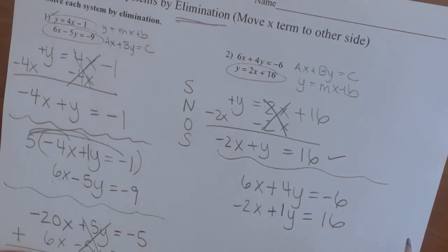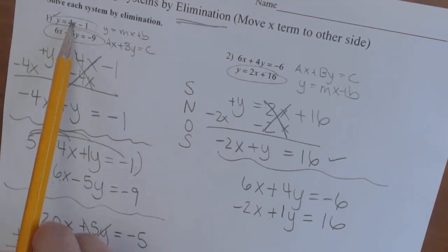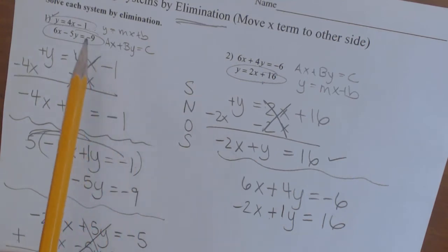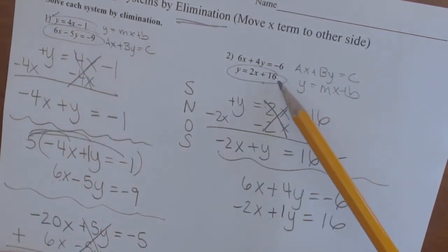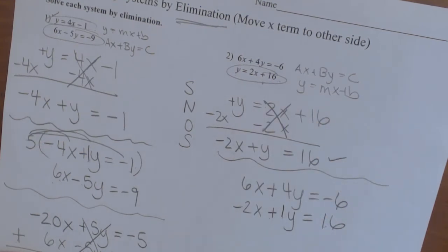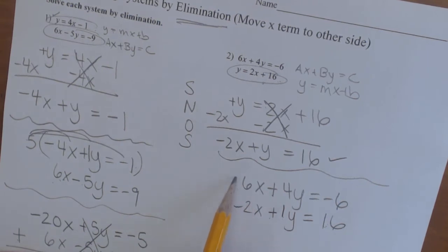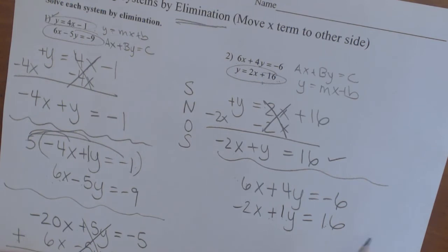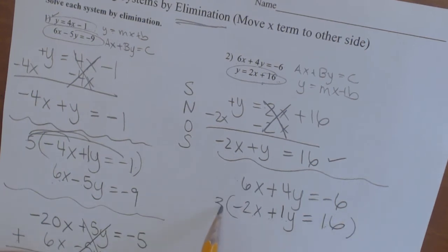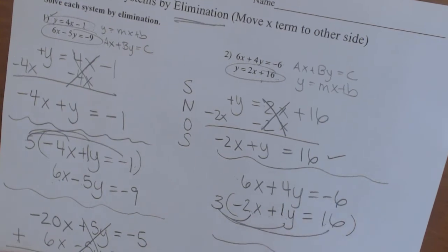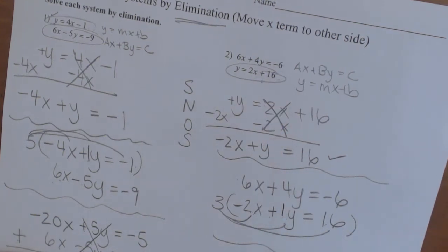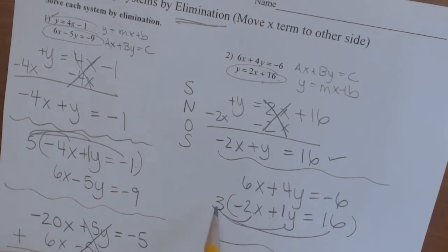We're looking for same number, opposite signs to use elimination. The x variables are opposite signs but not the same number. The y variables are not opposite and not the same number. I'm going to choose the x terms to eliminate because I have 6 and negative 2 — already opposite signs — so I just need to multiply by 3 to make the negative 2 into negative 6. So I'll multiply the bottom equation through by 3 and rewrite: 6x plus 4y equals negative 6 stays on top.